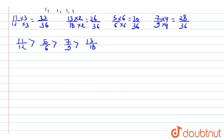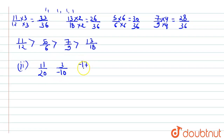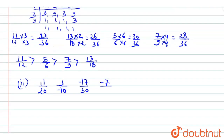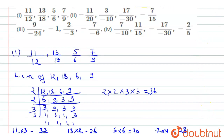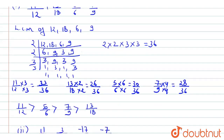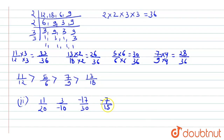Now for the second question: -11/20, -3/10, -17/30, and -7/15. We first check the fourth term — it is -7/15, not -7/(-15). We use the same LCM process with denominators 20, 10, 30, and 15.